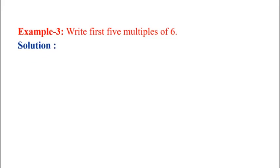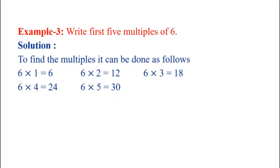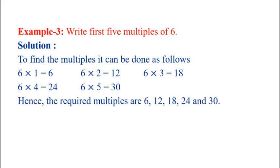Example 3: Write the first 5 multiples of 6. Solution: To find the multiples, we proceed as follows — the first multiple is 6×1 = 6; next, 6×2 = 12; 6×3 = 18; 6×4 = 24; 6×5 = 30. Hence, the required multiples are 6, 12, 18, 24 and 30.